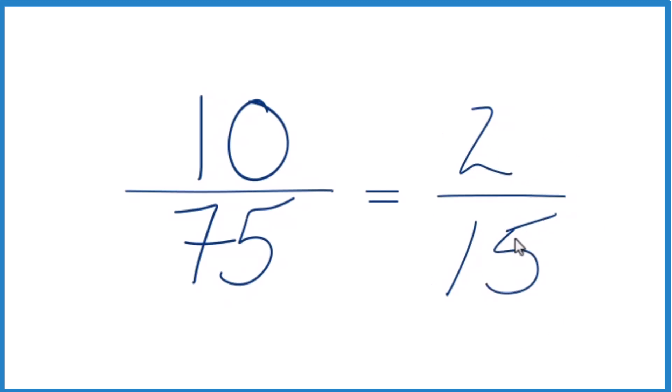If you were to divide 2 by 15 and 10 by 75, you'd get the same decimal answer because they're equivalent fractions. It's just that we've reduced or simplified 10/75 down to 2/15.